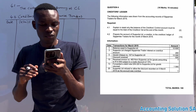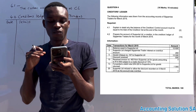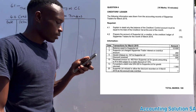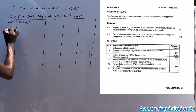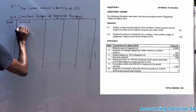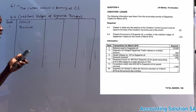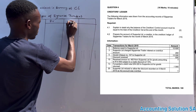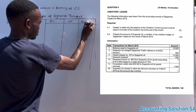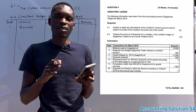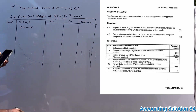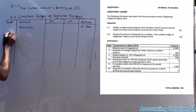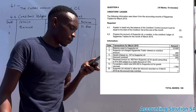Now for 4.2: prepare the account of Supporter Ltd, a creditor in the creditors ledger of Zikamise Traders for the month of March 2019. We have a date and transaction column, a debit side, a credit side, and a balance column — we have to record the balance after each and every transaction. The opening balance at the beginning of the month was fifteen thousand six hundred.